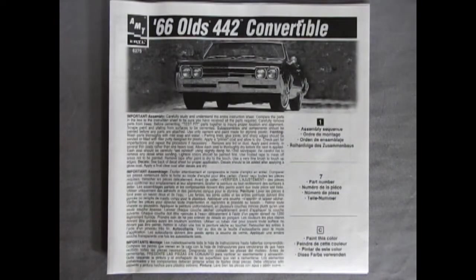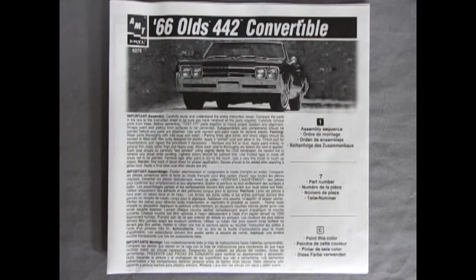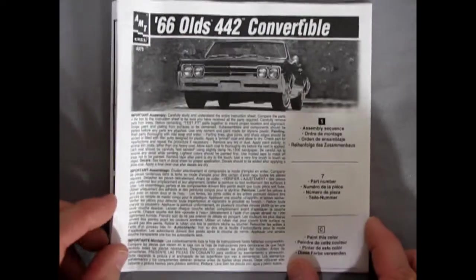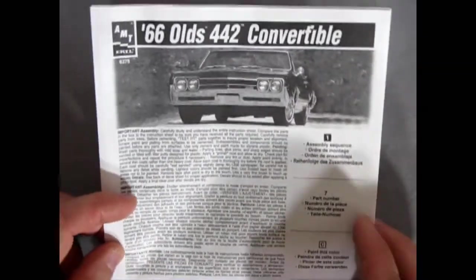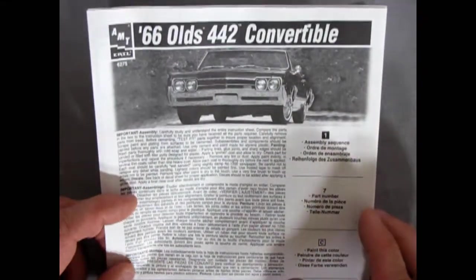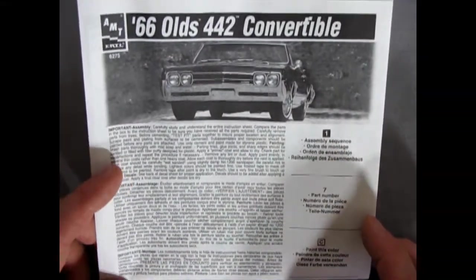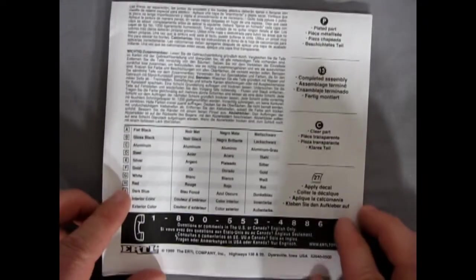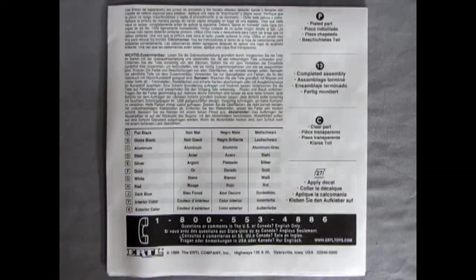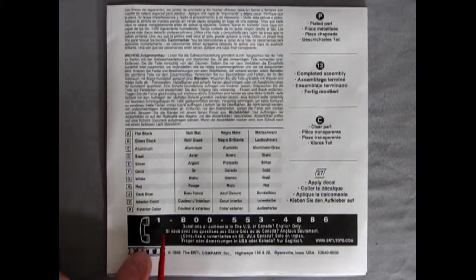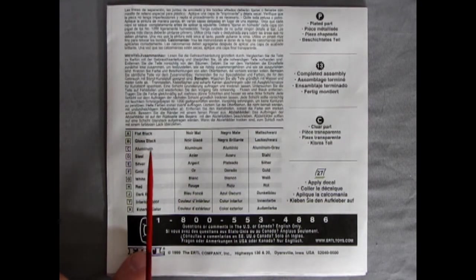Before we get into reviewing our plastic pieces we first have to look at the instruction sheet so we know where our parts are going to go. So first off we have the nice photograph of the real 66 old 442 convertible up top. And as we open or turn the instructions around here you also get the call number but I don't think this is useful anymore.